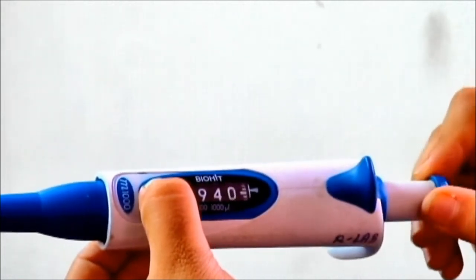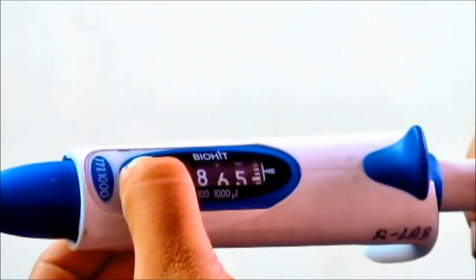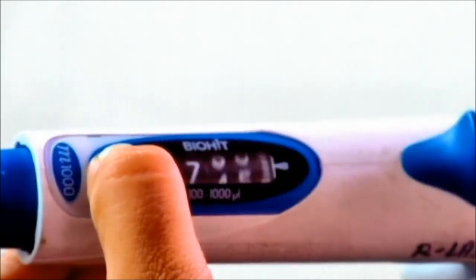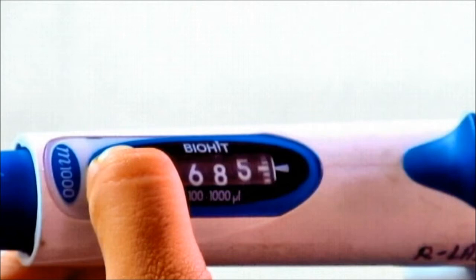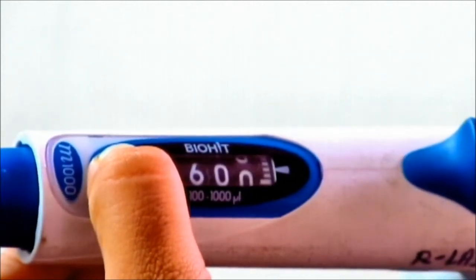For example, to adjust the volume to 600 microlitre, the volume adjustment knob is rotated in a clockwise manner. This is how a 600 microlitre volume has been achieved.